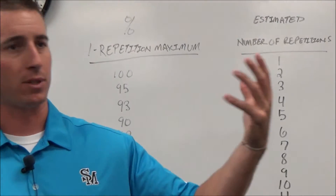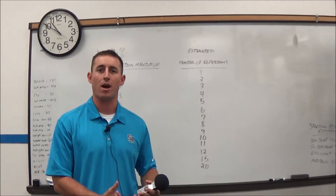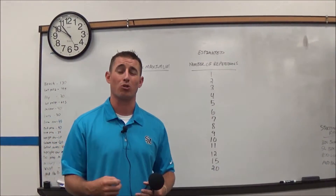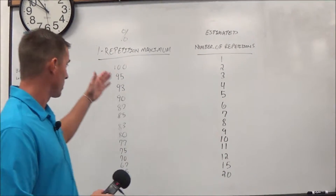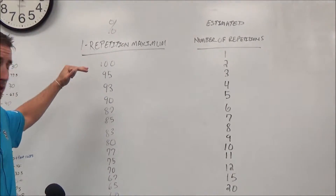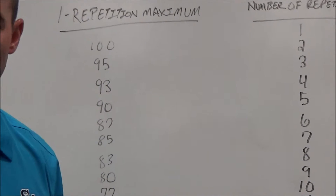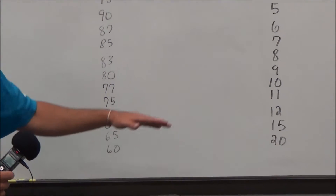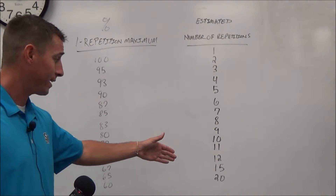We would start out by lifting, say, 145, and we're going to work up. If that client can get 10 reps of 145, he's going to continue to go up until he reaches his one rep max. Once we get that one rep max, we can use this to put together the program — how many reps we're going to do percentage-wise over a period.